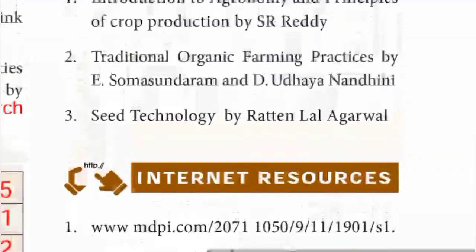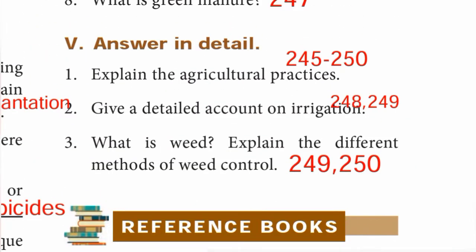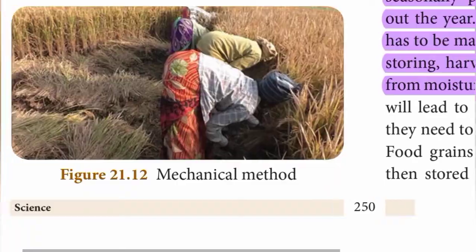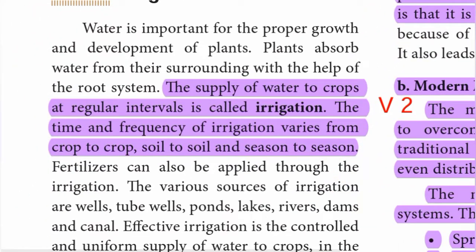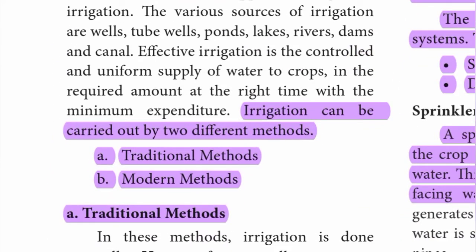Question number two, detail second: Give a detailed account on irrigation. Page numbers 248 and 249. From page 248, the supply of water to crops at regular intervals is called irrigation. The time and frequency of irrigation varies from crop to crop, soil to soil, and season to season.